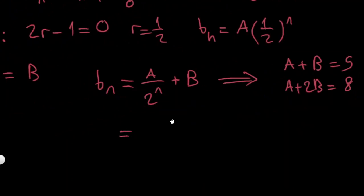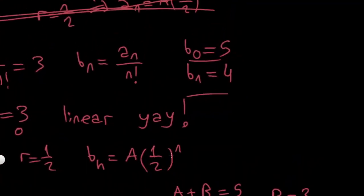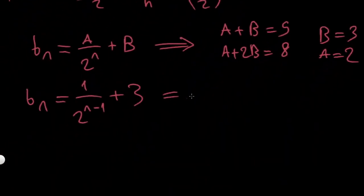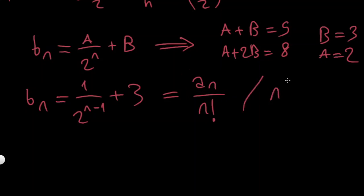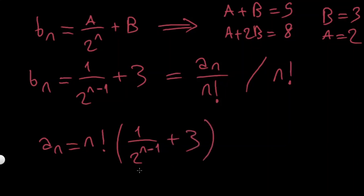So I found a equals 2 and b equals 3, giving b_n equals 2·(1/2)^n plus 3, which simplifies to (1/2)^{n-1} plus 3. Since we defined b_n as a_n over n factorial, multiplying both sides by n factorial gives the final answer: a_n equals n factorial times (1/2)^{n-1} plus 3. It looks wild, but that's our answer!